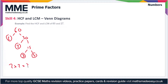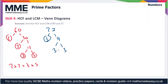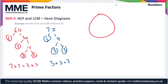Now if we go to 27: 27 divides into 3 times 9. 3 is prime, and 9 divides into 3 and 3, so we circle all the 3s. So 27 is 3 times 3 times 3.